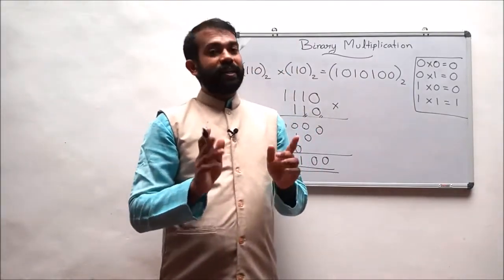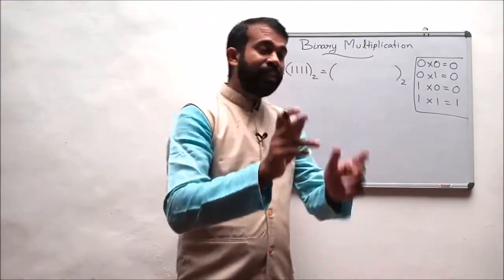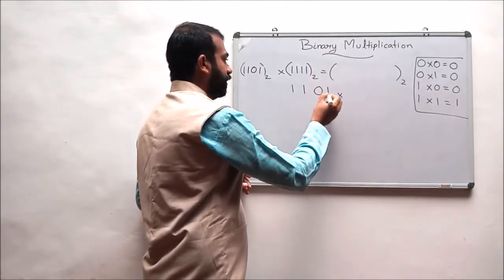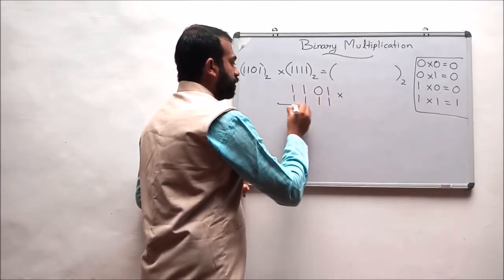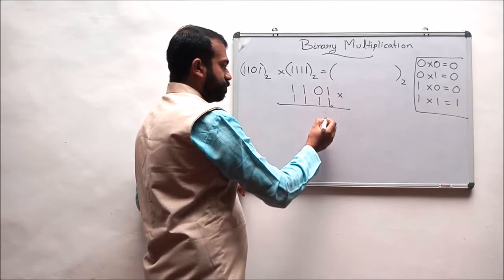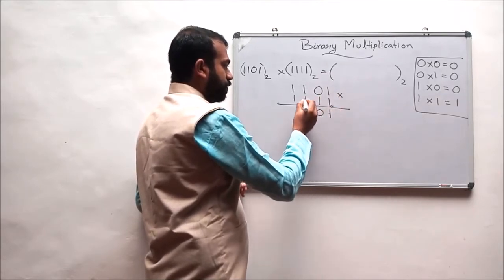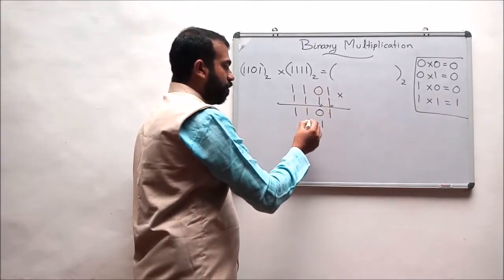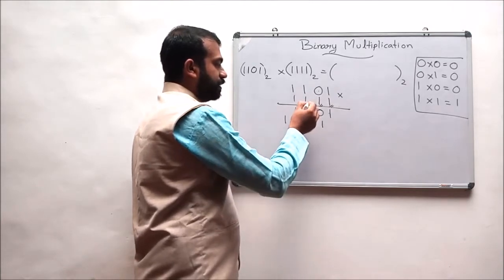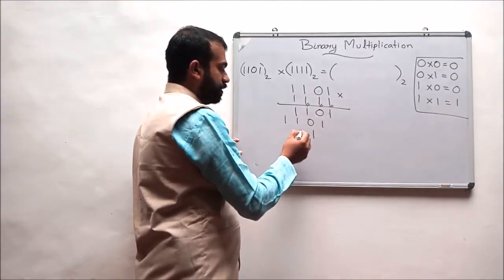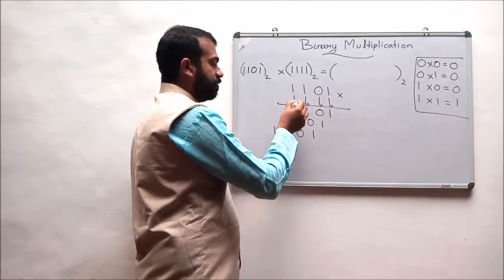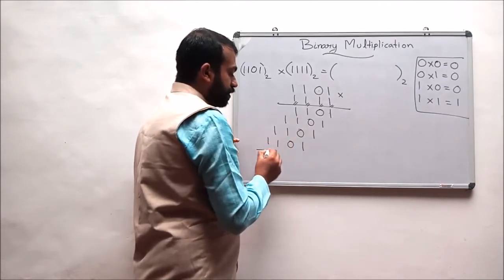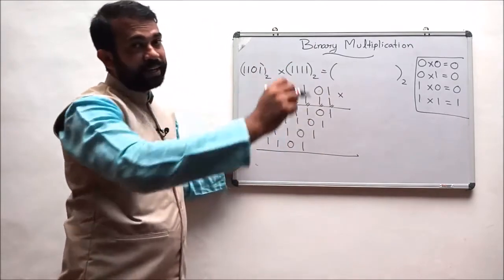Our next example is: multiply 1101 with 1111. First, multiply the LSB position: 1 multiplied with 1101 results in 1101. The second 1 multiplied with 1101 results in 1101. The third 1 multiplied with 1101 results in 1101. And finally, the fourth 1 multiplied with 1101 results in 1101. The final step is to perform binary addition.